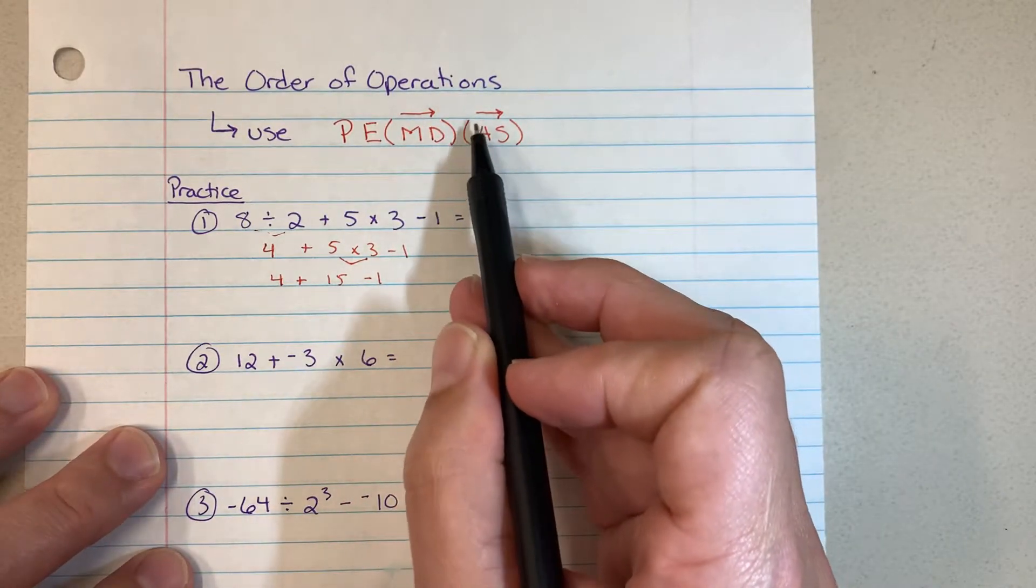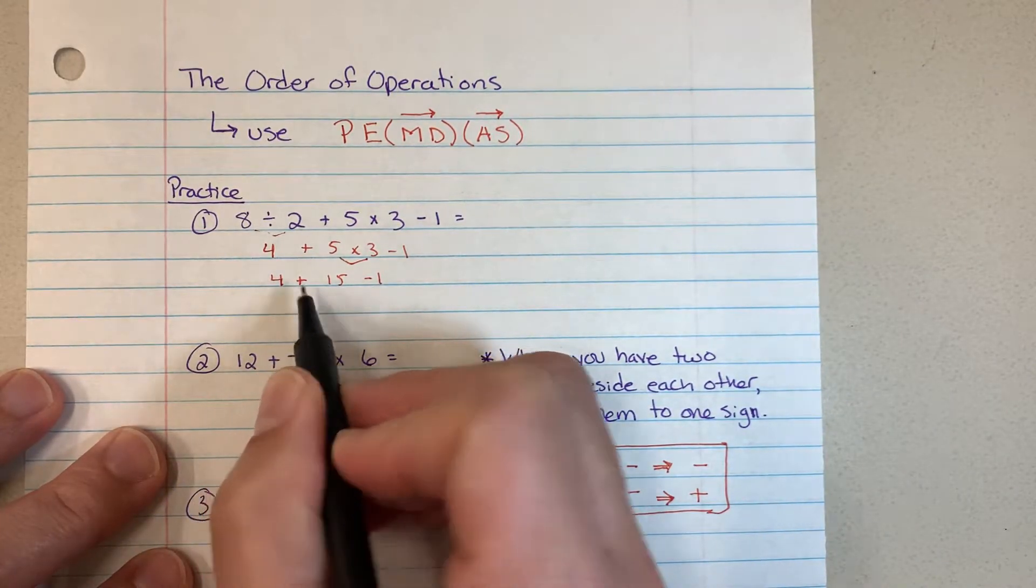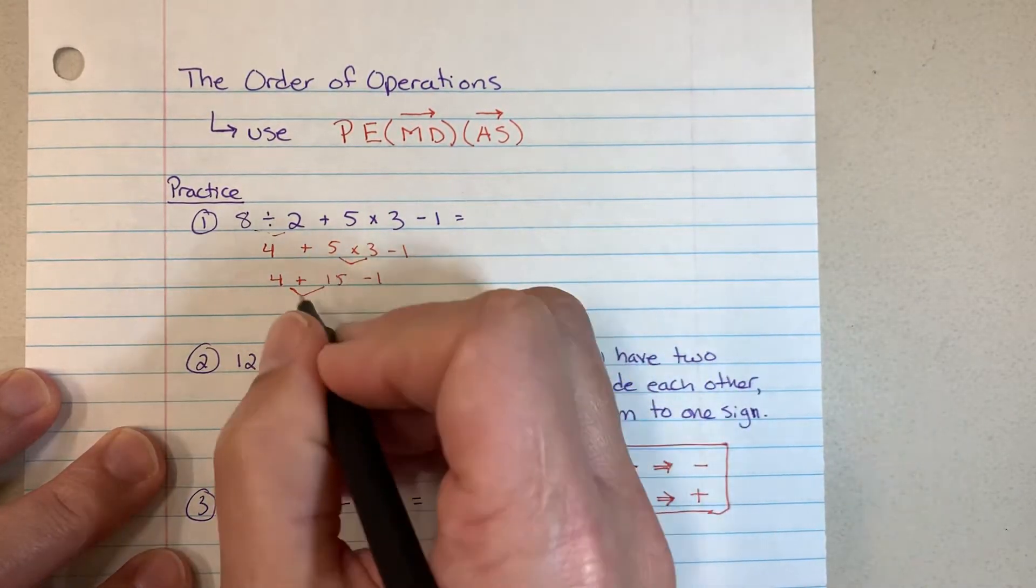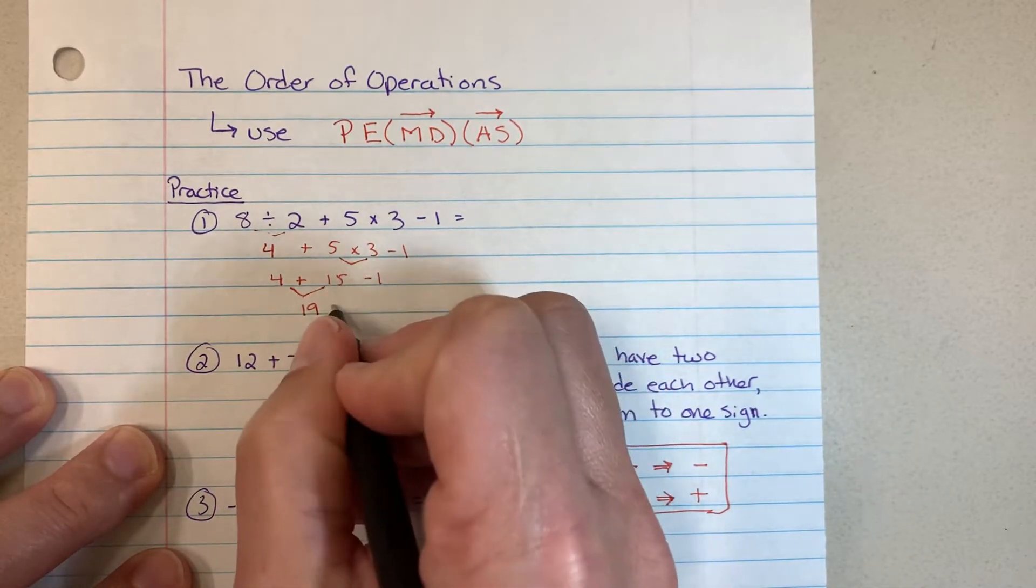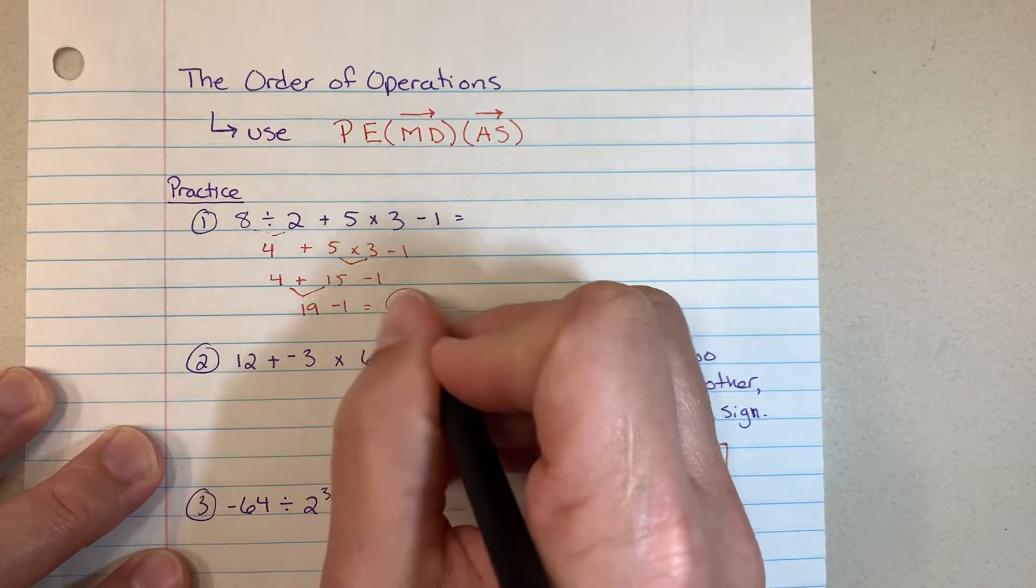Addition subtraction. Let's work from left to right. We run into addition first, so 4 plus 15 is going to give us 19, and then the last thing is 19 minus 1, and that gives us 18.